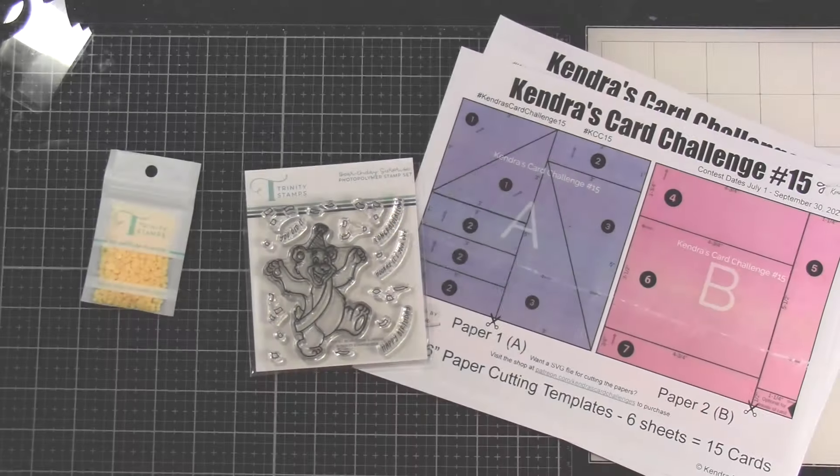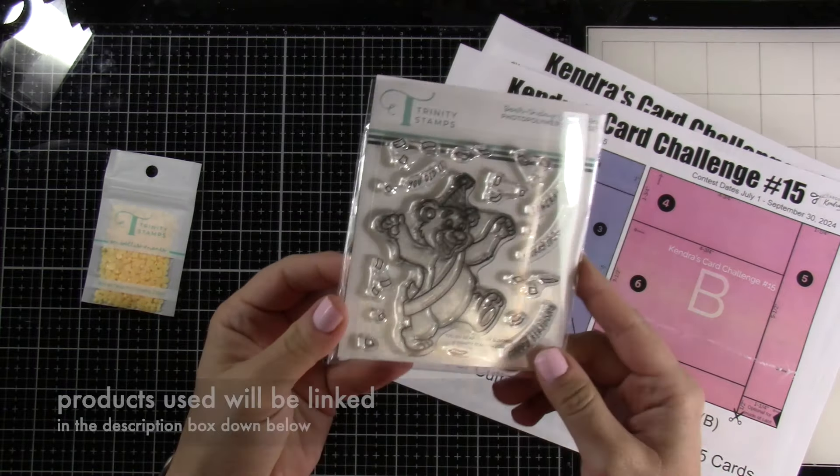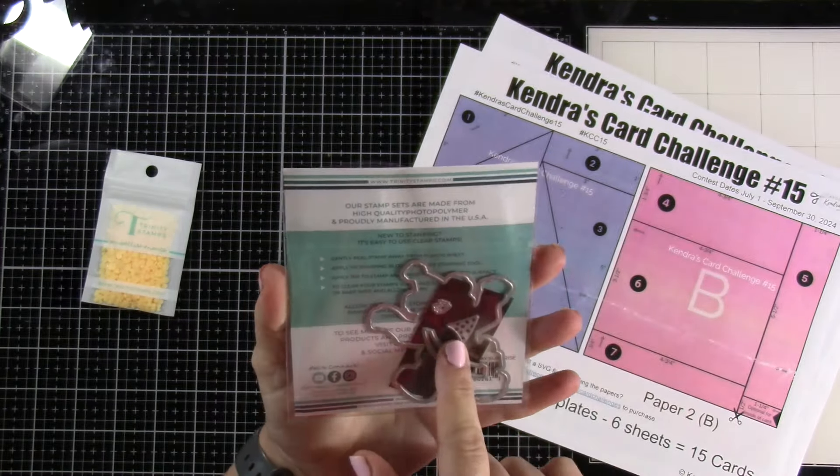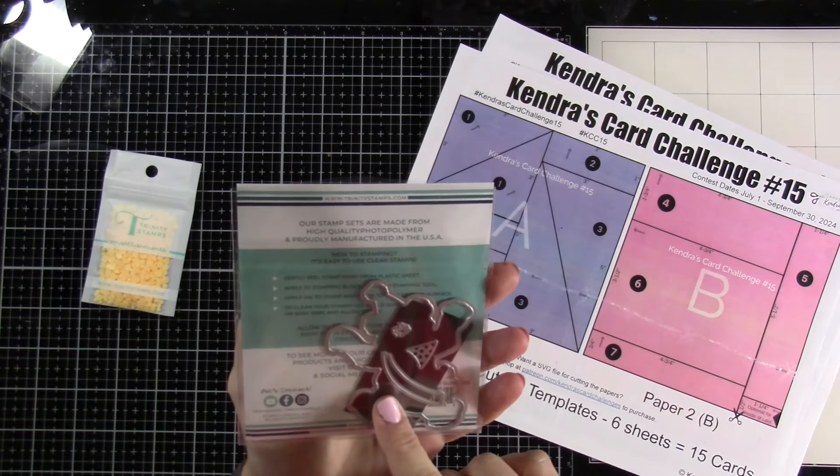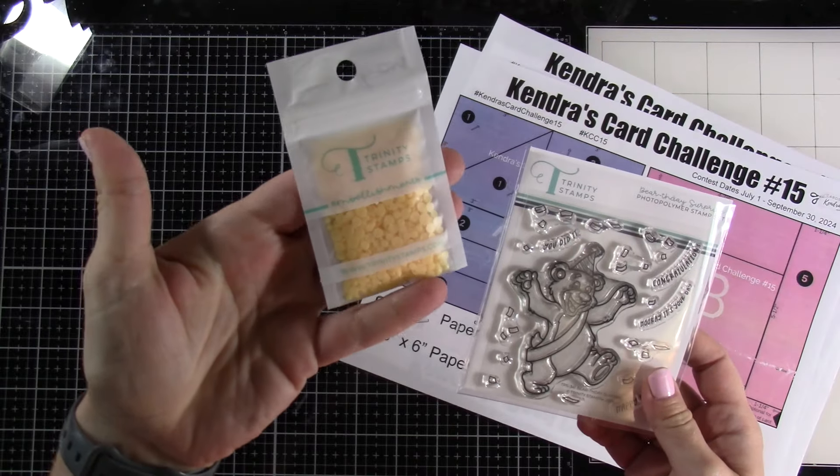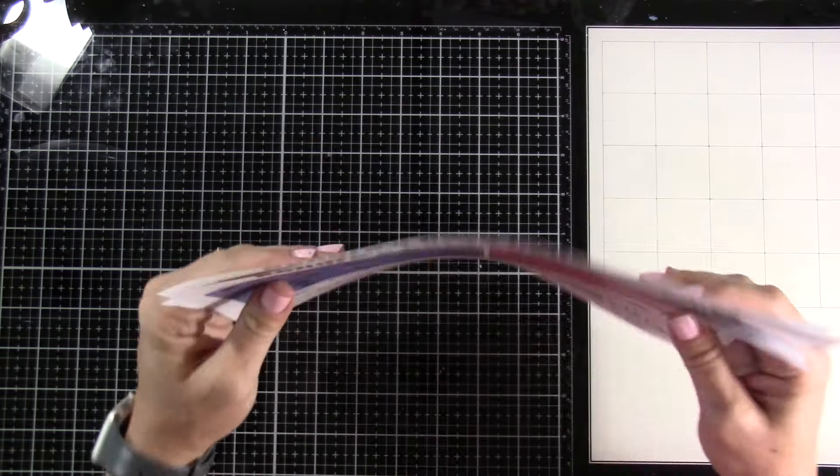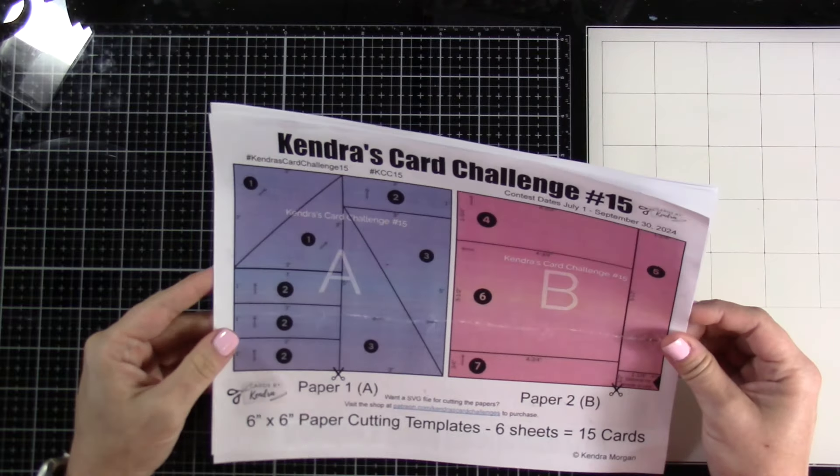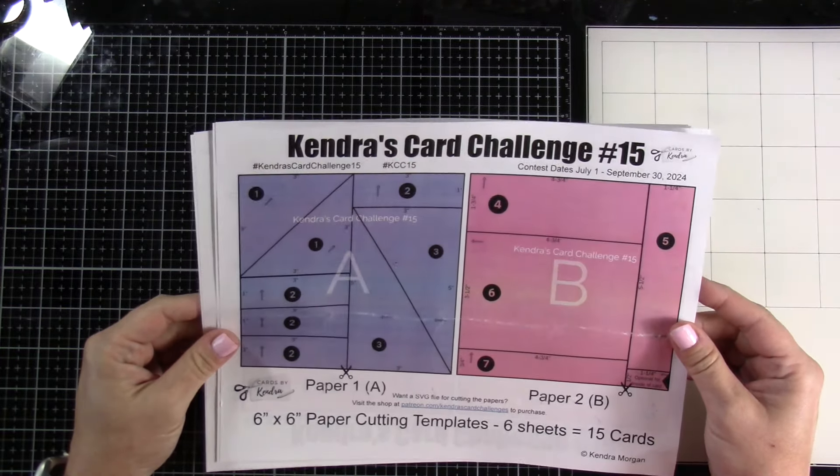Today we are going to be playing with Kendra's Card Challenge number 15, and we're going to be playing with some Trinity Stamps products because Trinity Stamps is sponsoring, so very exciting. This is the Birthday Surprise Stamp Set. I'm going to pair that up with some rubber ducky embellishments. I'll bring in some other things later on as well.